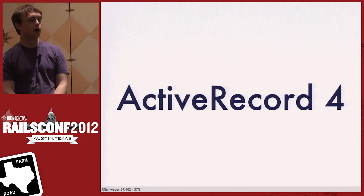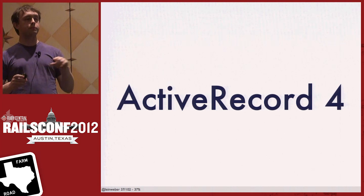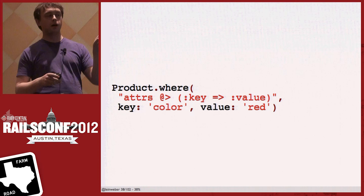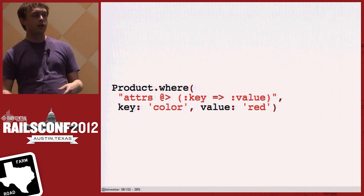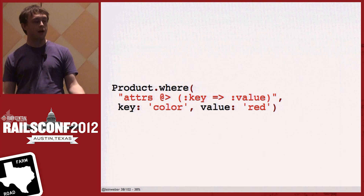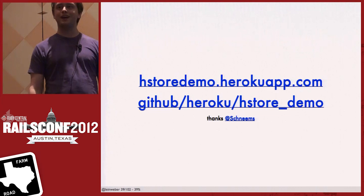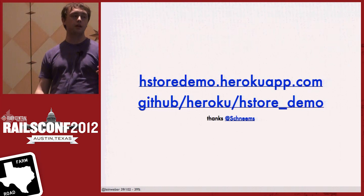Installing HStore is really easy — type 'create extension hstore'. You can put this in your migrations. This does require Postgres 9.1 or later. And here's the best news: ActiveRecord 4 has built-in HStore support. Here's how it looks in ActiveRecord. The @> operator I didn't talk about — you can look up all the operators in the Postgres documentation, which is pretty fantastic. A colleague, Shnimas, put up a demo on Heroku. H4Demo.HerokuApp.com is an example app using HStore — you can go there and play around with it.